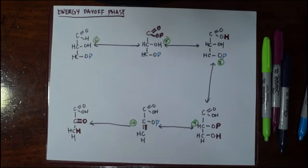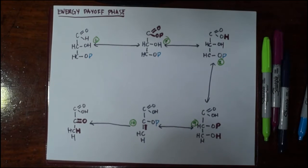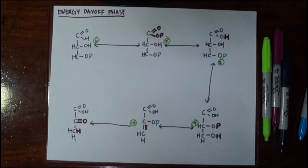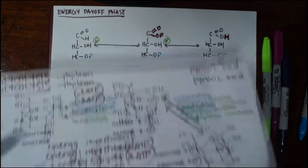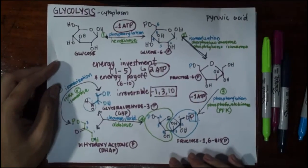Now we are at the second half of glycolysis, which is the energy payoff phase. As the name implies, we're supposed to get what we invested for in the initial five phases, which was two ATPs, so we should be able to get more than two ATPs here. But in order for us to completely visualize that, we must be able to recall that in the first five phases...